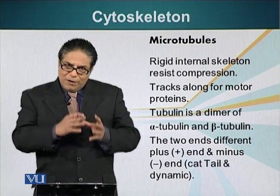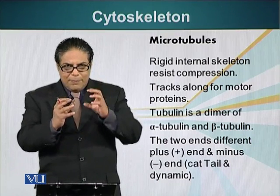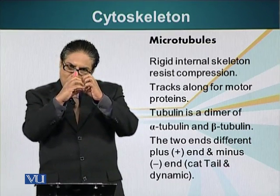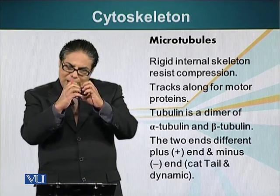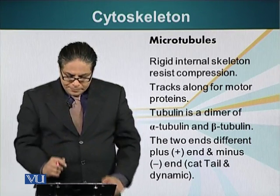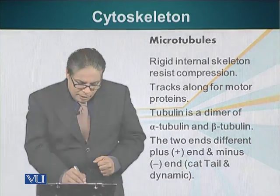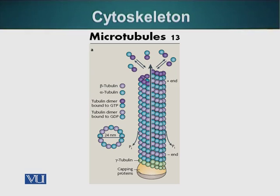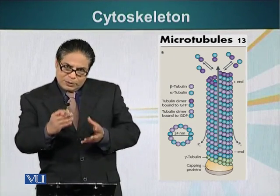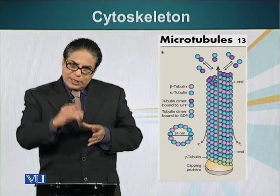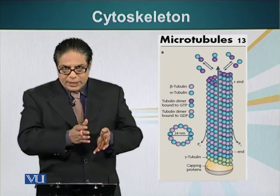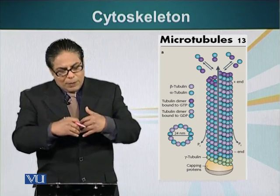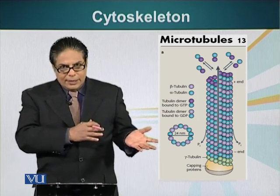Microtubules are made up of subunits of alpha and beta tubulin. These two molecules — alpha and beta tubulin — come together and form one monomer, so one tubulin monomer is made up of alpha and beta tubulin subunits. The microtubules are linear structures, and the two ends of the microtubules are different. One end is called the plus end and the other is called the minus end. The plus end is the site where new tubulin subunits add on, resulting in elongation of the microtubule. Subunits also come off from the plus end much more quickly than from the minus end.